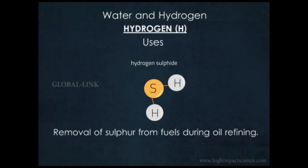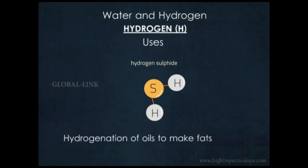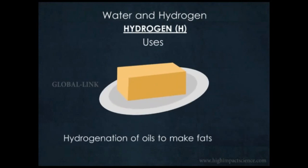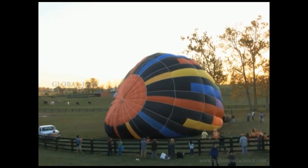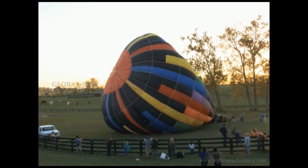Large amounts of hydrogen are used to hydrogenate vegetable oils to form fats, like to make margarine. Because it's lighter than air, it is used in balloons which make them rise.